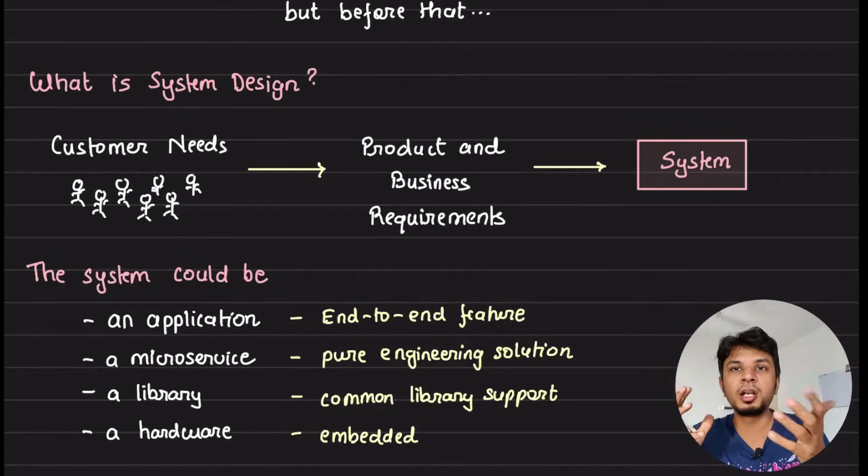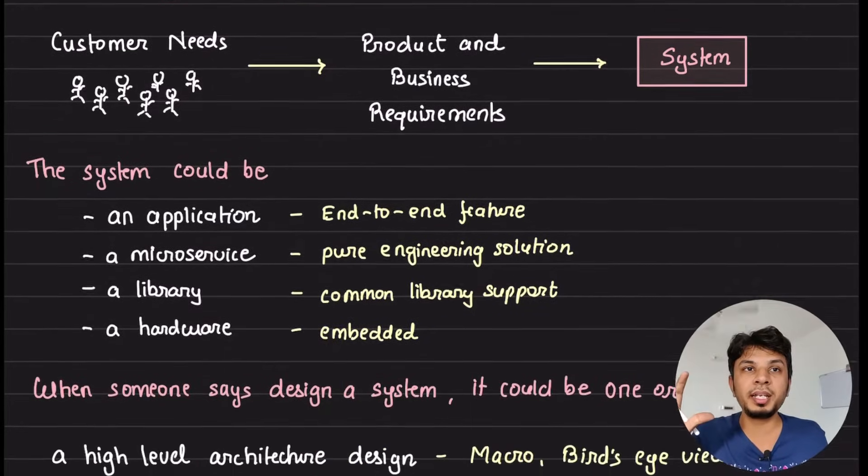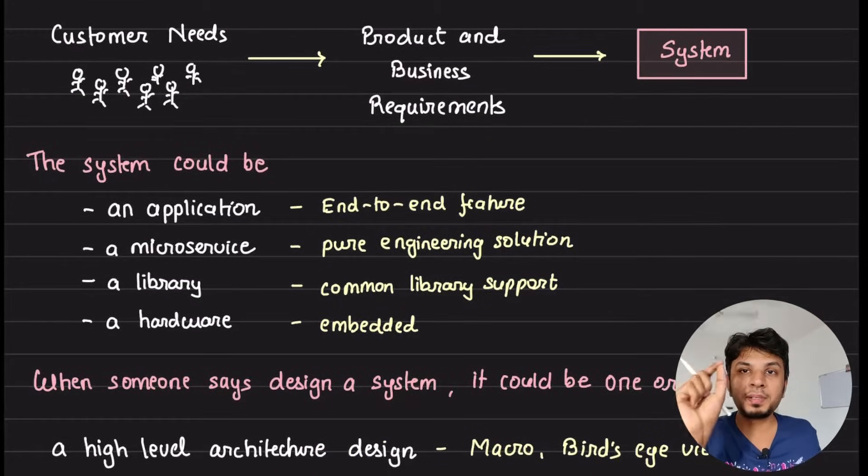Then your product manager or your business team sends a requirement to the product team and product team designs that part and then it comes to you. And that's what translates into that system. Everything boils down to the business or the product problem statement and then you have to solve it.